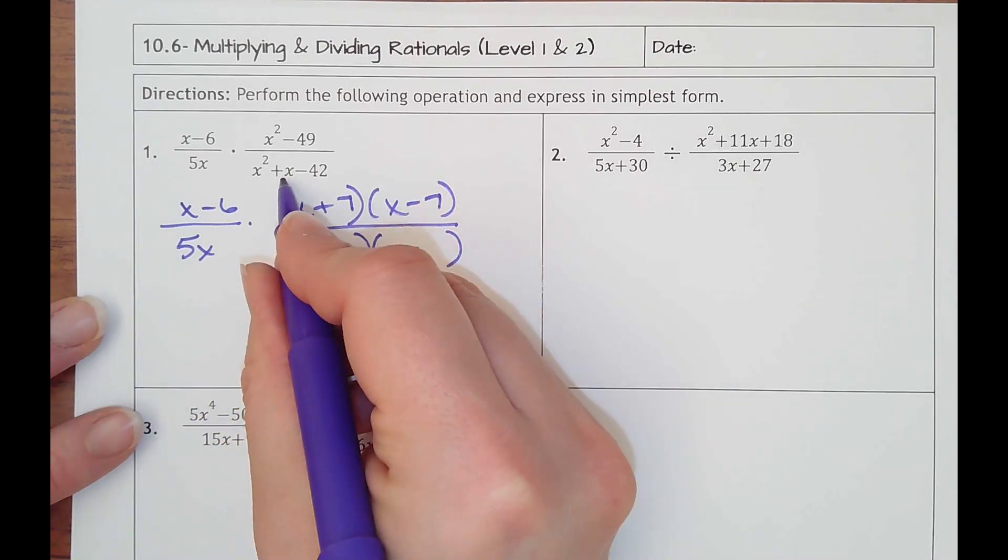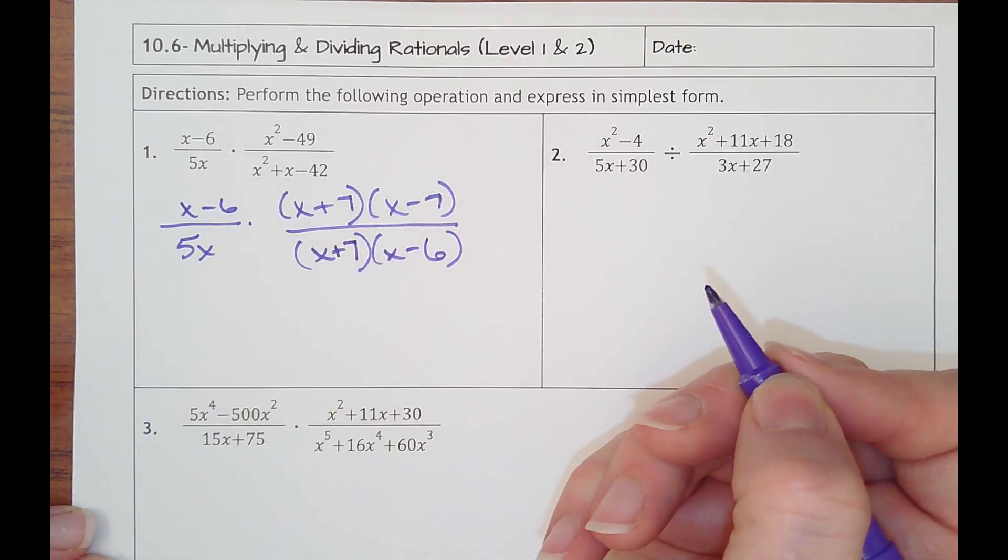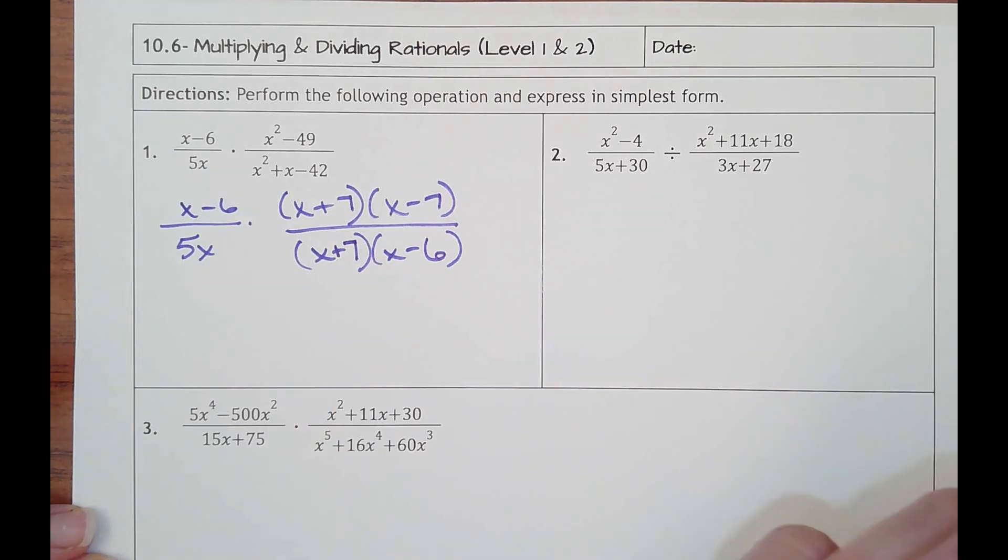So I'm subtracting the numbers. They need to be one digit apart or consecutive, which would be 7 minus 6 makes 1. 7 times negative 6 makes negative 42.